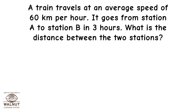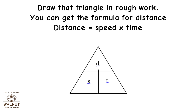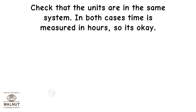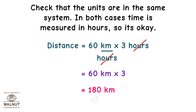A train travels at an average speed of 60 km per hour. It goes from station A to station B in 3 hours. What is the distance between the two stations? Speed = 60 km/h, Time = 3 hours, Distance = unknown. Using the triangle: Distance = Speed × Time = 60 km/h × 3 hours. Therefore, the distance between the two stations is 180 km.